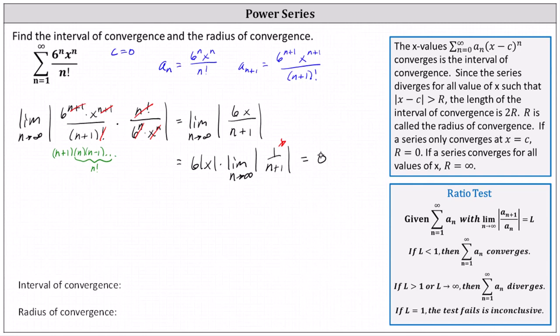So the limit is always equal to 0, which is less than 1. This indicates the power series always converges, meaning it converges for all values of x. The interval of convergence is all real numbers, or using interval notation, the open interval from negative infinity to positive infinity, and the radius of convergence equals infinity.